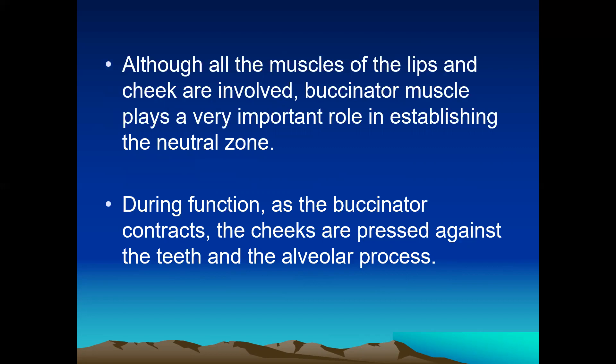Although all the muscles of the lips and cheeks are involved, some muscles are given more importance. The Buccinator muscle plays a very important role in establishing the Neutral Zone. As we all know, the Buccinator is known as the muscle of the cheek. It arises from an area above the first molar and is inserted below the lower molars. During function, as the Buccinator contracts, the cheeks are pressed against the teeth and the alveolar process.